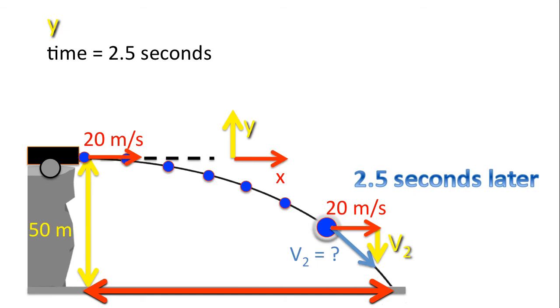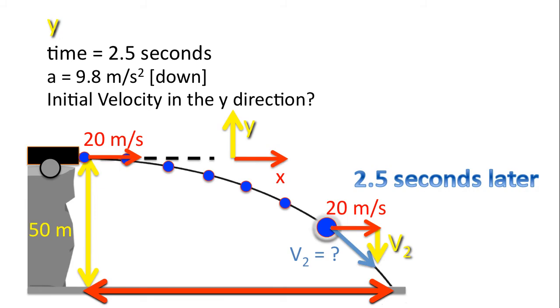We know the time of flight is 2.5 seconds. The acceleration is 9.8 meters per second per second. Remember that the initial velocity in the Y direction, what is it? Well, we look at that point, and notice, again, as already mentioned, at that specific point, all of the motion is in the X direction. It's not moving up or down when it's launched. And so the initial velocity in the Y direction is 0 meters per second.